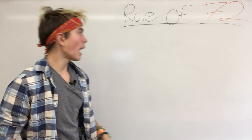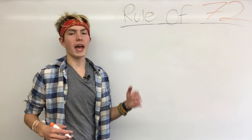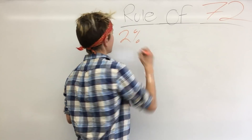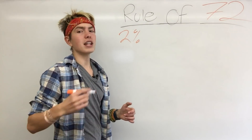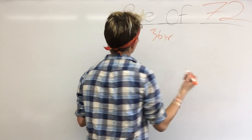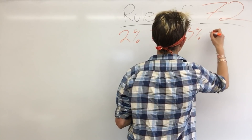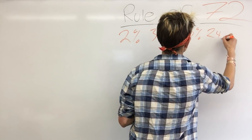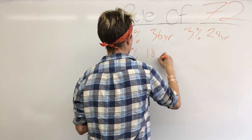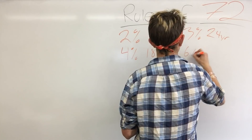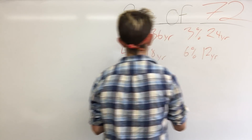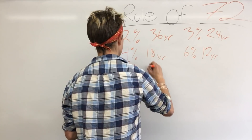Say I wanted to double my money with a 2% return — how long would it take? The answer is 36 years. What about 3%? That's going to take 24 years. And 4%, it's going to take 18 years. 6% is going to take 12 years. What about 8%? It's going to take 9 years.